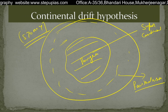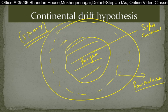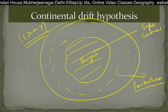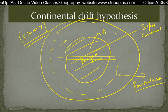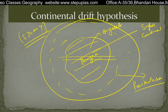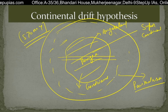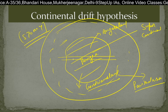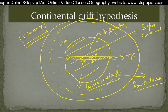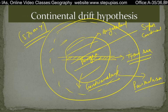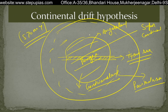The supercontinent Pangaea was surrounded by Panthalassa ocean. Wegener said that 570 million years ago, the northern part of the supercontinent was called Angara Land, and the southern part was called Gondwana Land. Eventually the continent began to drift apart.